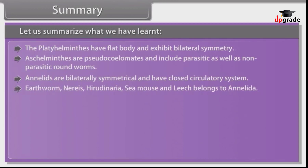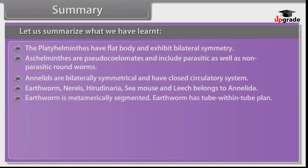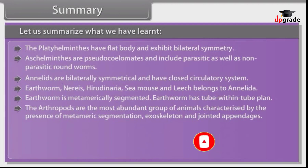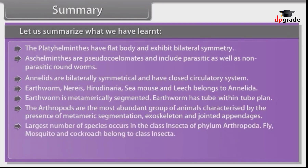Earthworms, Nereis, Hirudinaria, sea mouse and leech belong to Annelida. Earthworm is metamerically segmented and has a tube-within-tube body plan. The arthropods are the most abundant group of animals, characterized by the presence of metameric segmentation, exoskeleton and jointed appendages. The largest number of species occurs in the class Insecta of phylum Arthropoda.